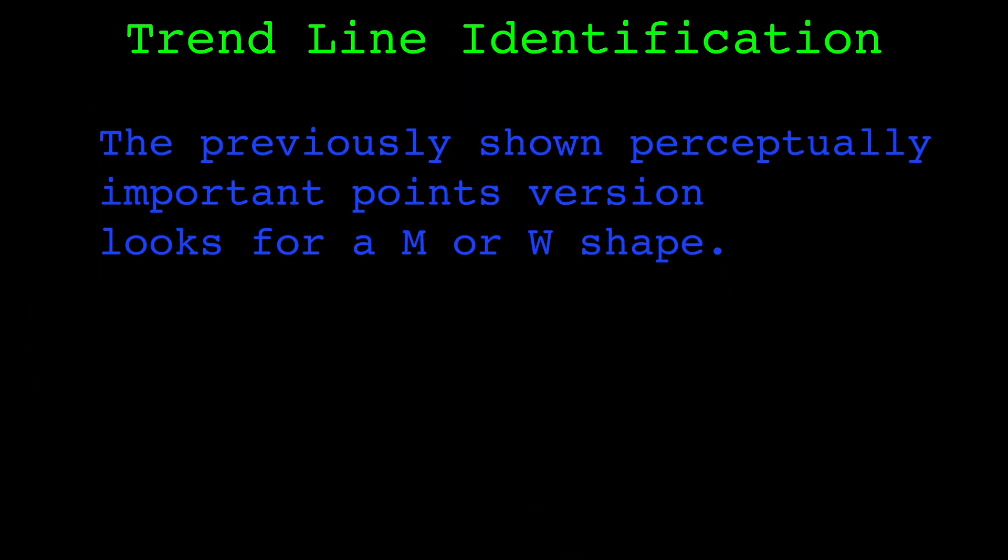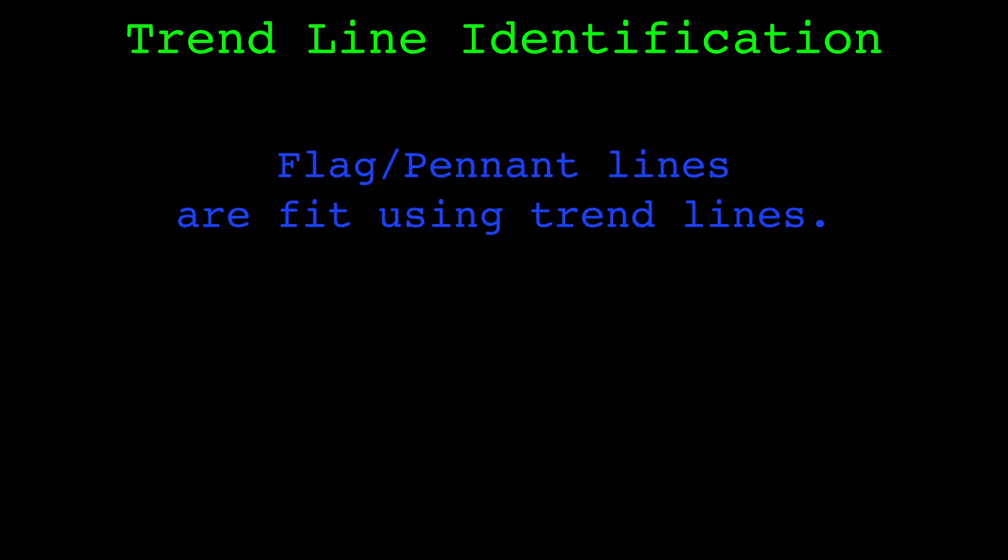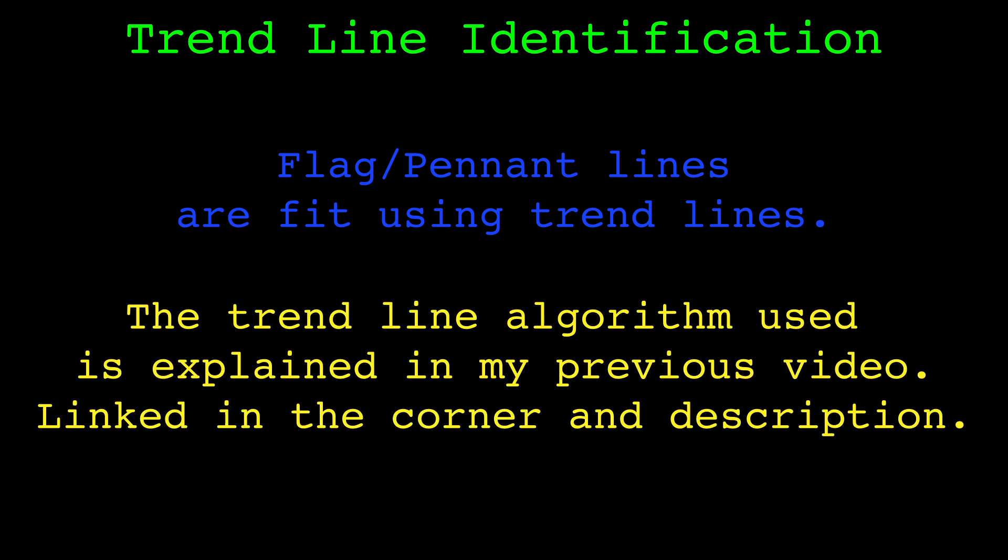I was unsatisfied using just this identification algorithm. The perceptually important points loosely enforces the M or W shape in the flag area. I was curious if that even mattered, so I made a second version, which pays less attention to the shape the price makes in the flag. This second version makes use of the trendline algorithm I published recently. I will not go over it again here, but I explain it in detail in the video linked in the corner. I'd watch that before continuing if you haven't seen it already.